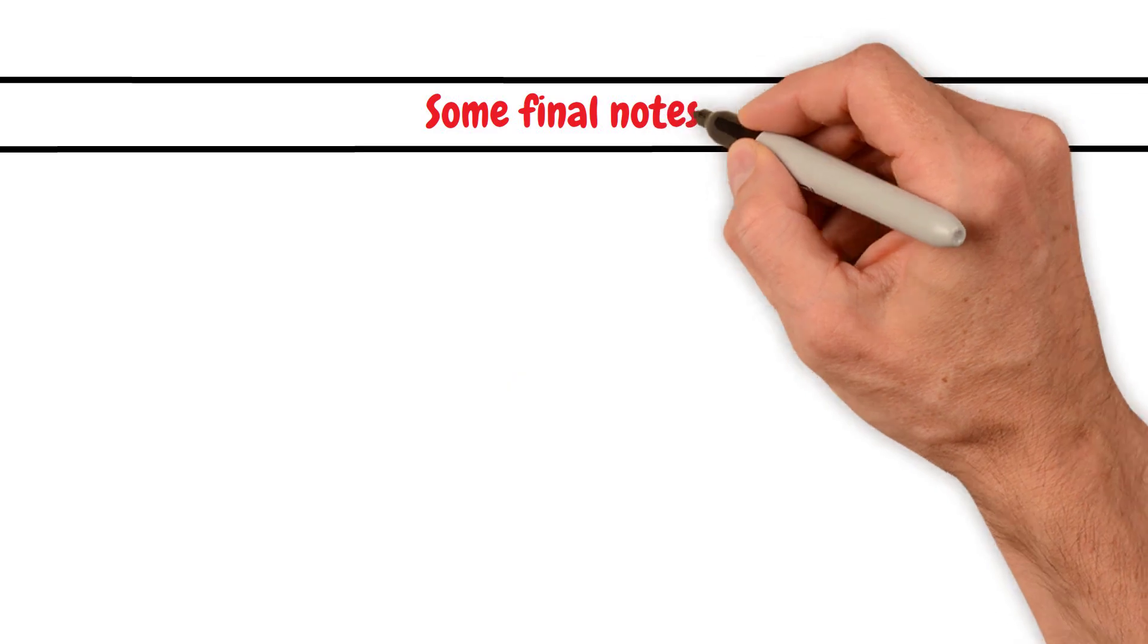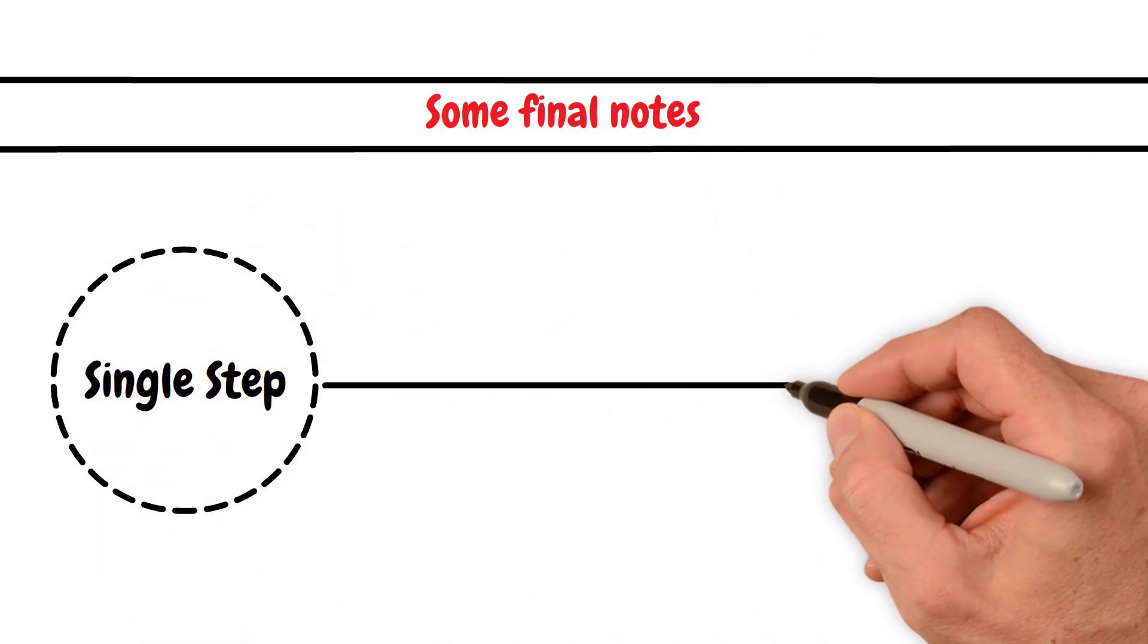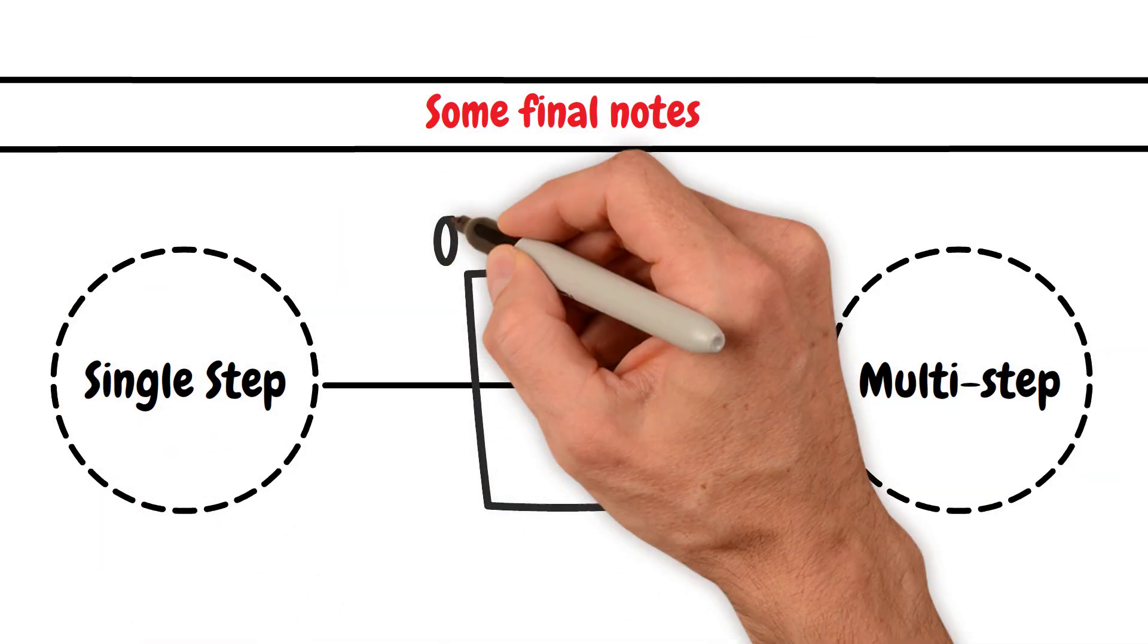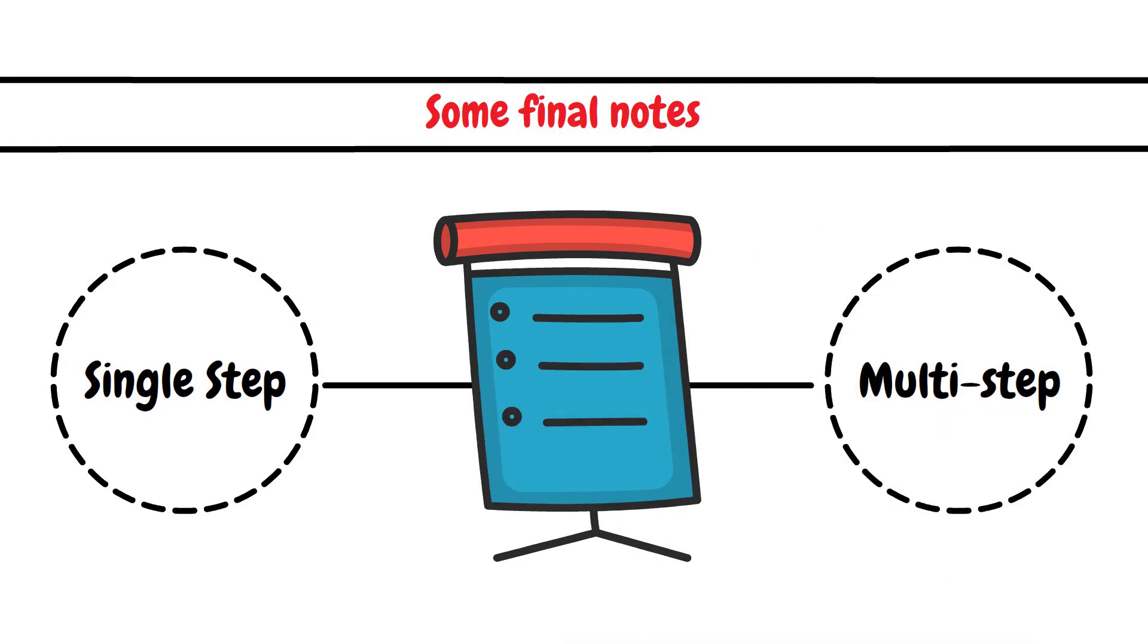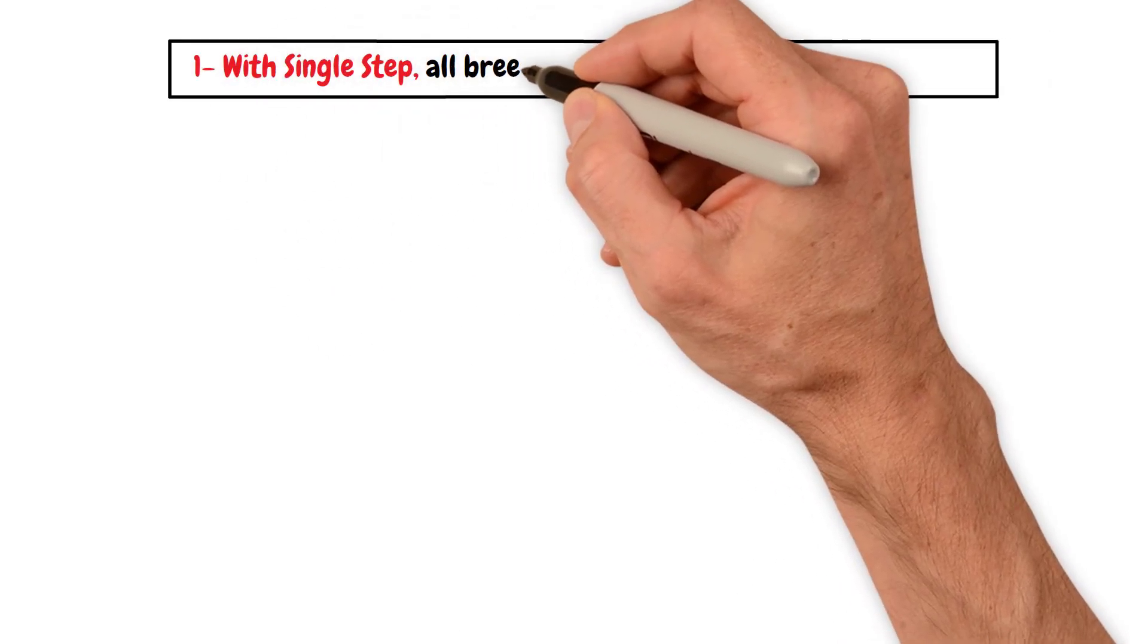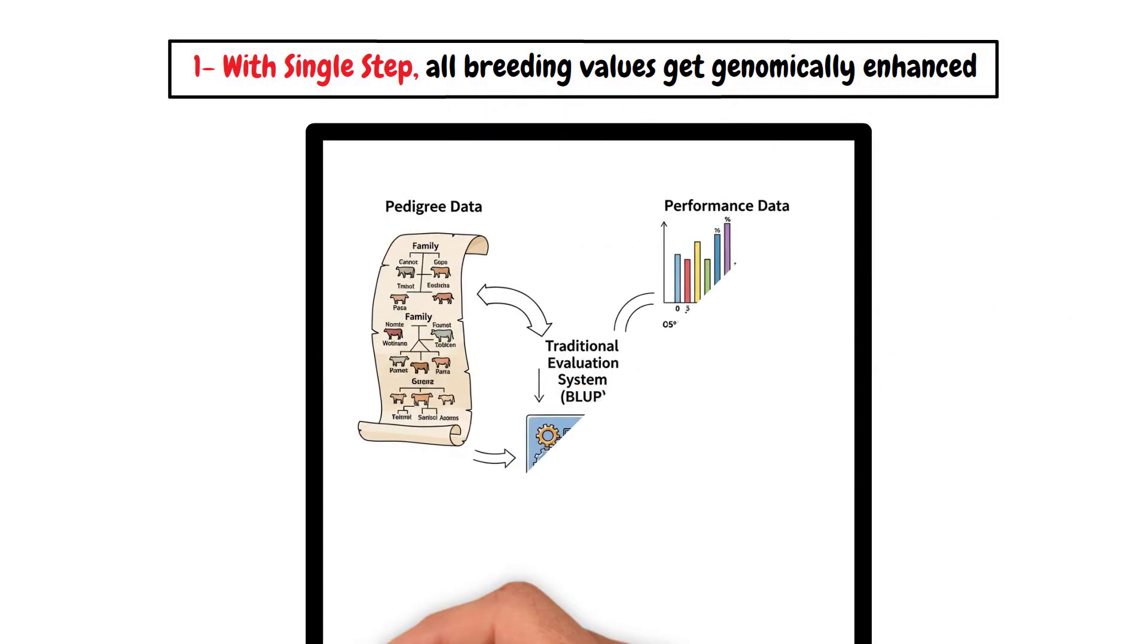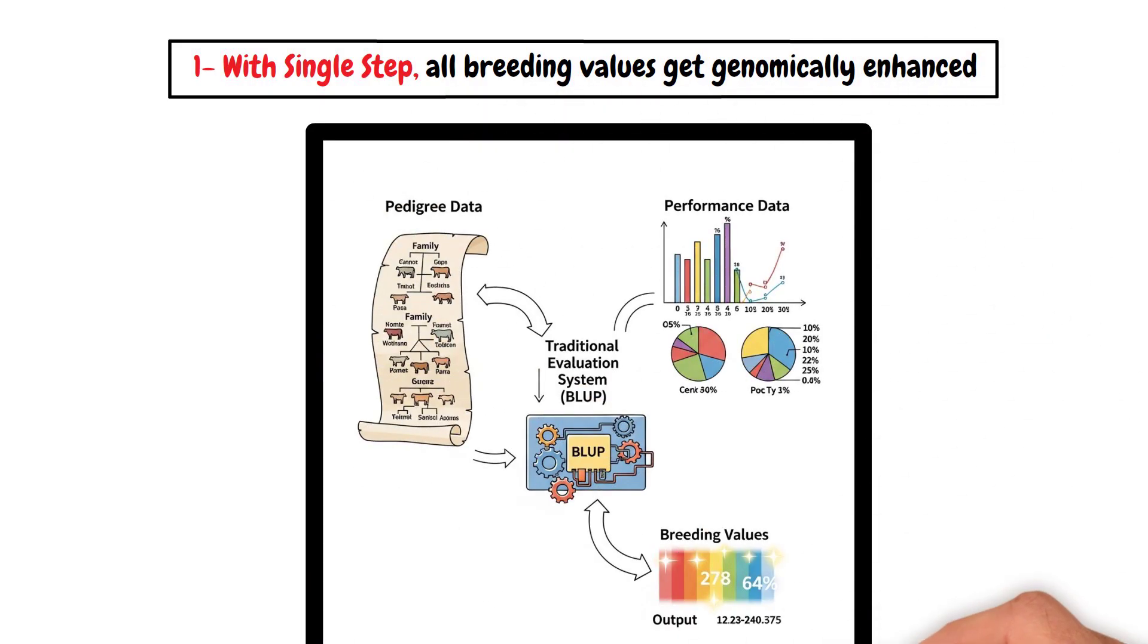Some final notes. While single-step is an obvious upgrade to multi-step, we do have to make a few notes as well. 1. With single-step, all breeding values get genomically enhanced. Thus, we say goodbye to pure traditional evaluations that only use pedigree and phenotypes.